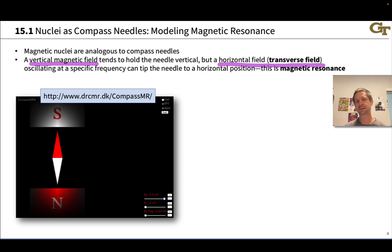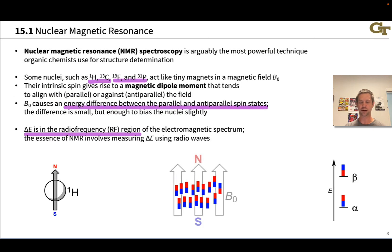This oscillation at a specific frequency is what we know as magnetic resonance, and it only occurs when the frequency of oscillations in that horizontal direction matches the natural what's called precession frequency of the nucleus or in the simulation of the compass needle.